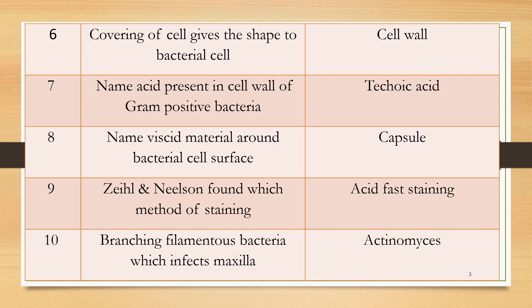Question 9: Ziehl-Neelsen — a very famous staining method. Ziehl-Neelsen found which method of staining? Answer: Acid-fast staining, which is frequently used for staining Mycobacterium tuberculosis and related bacteria.